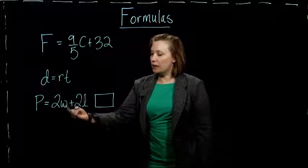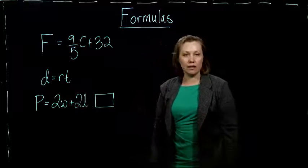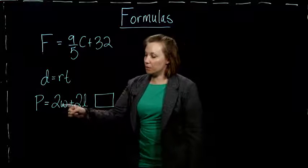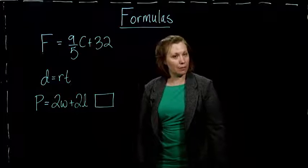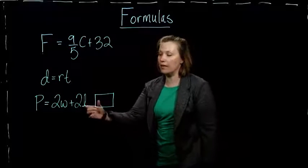Perimeter, the perimeter is equal to 2 times the width plus 2 times the length. And what we can do is just put in the width and the length that we have, and do the calculation, and it will give us the perimeter of a rectangle with that length and width.